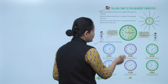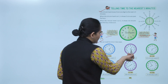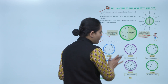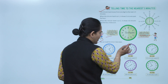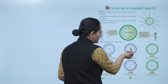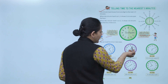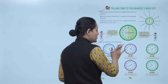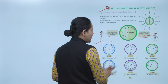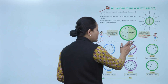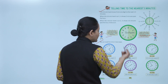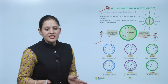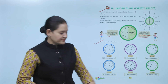Here the small hand is on 4 and the big hand is on 1, which means we will read the time as 4:05, or 5 minutes past 4.